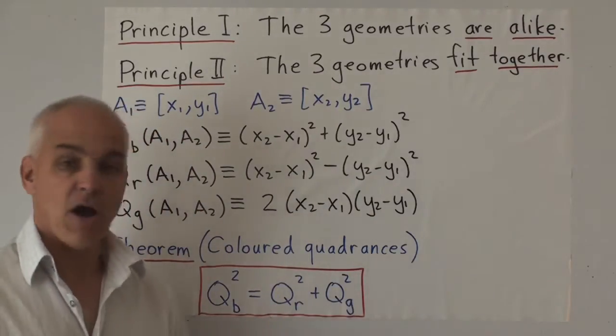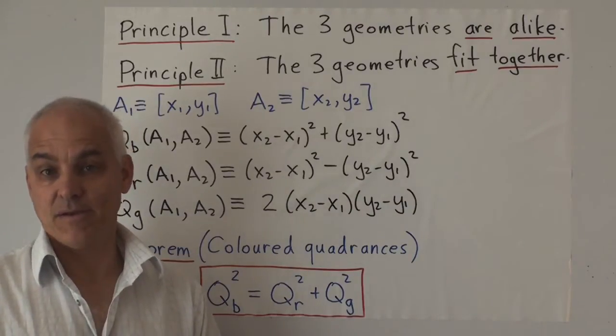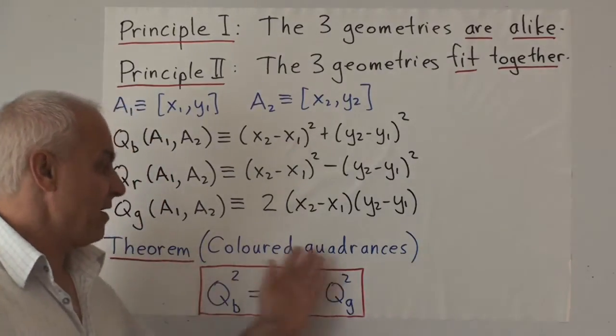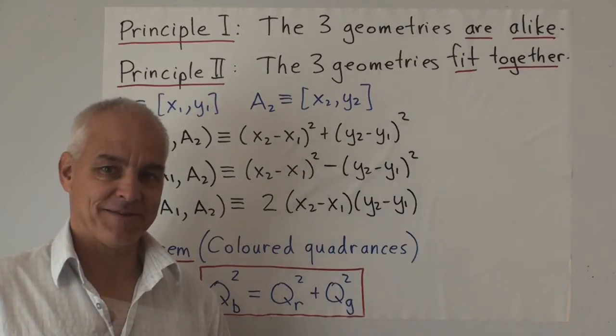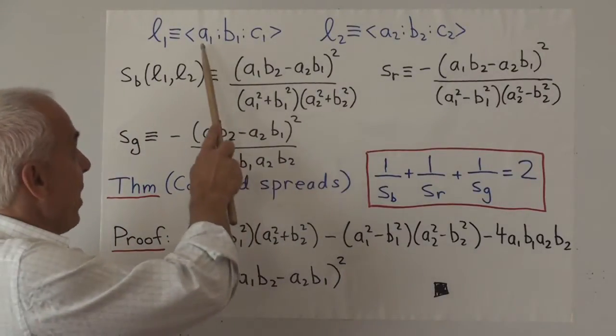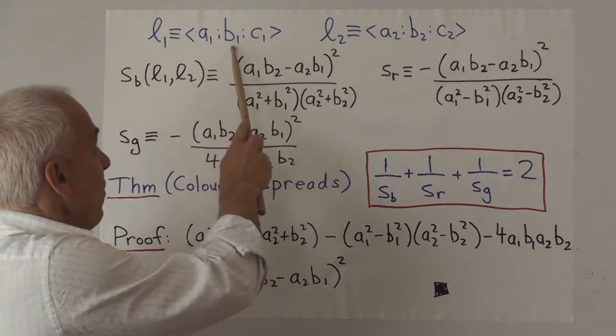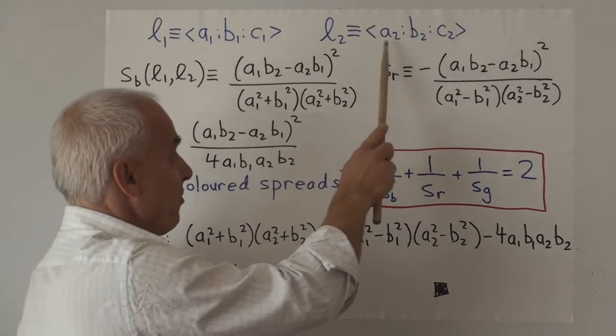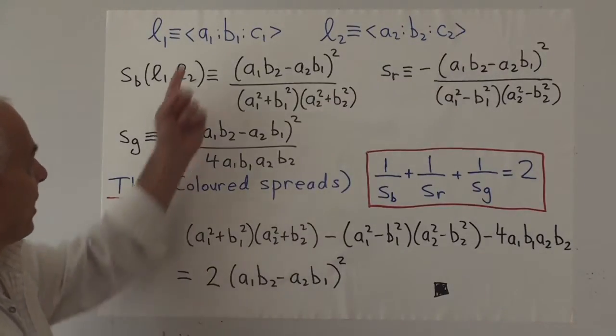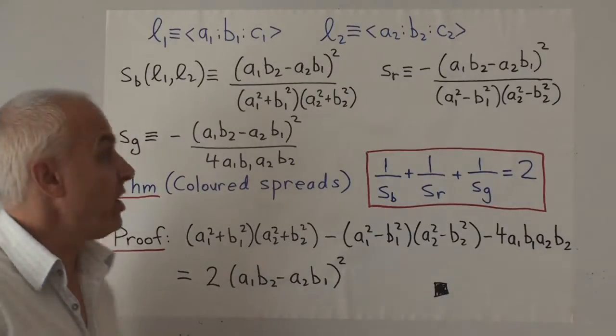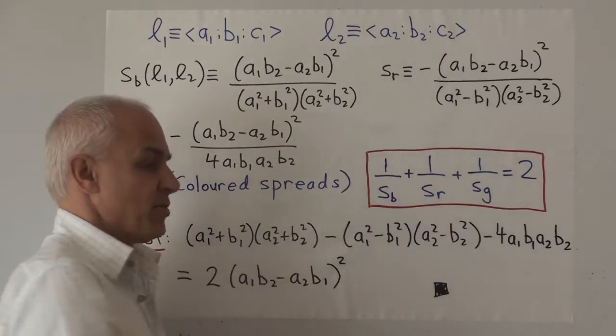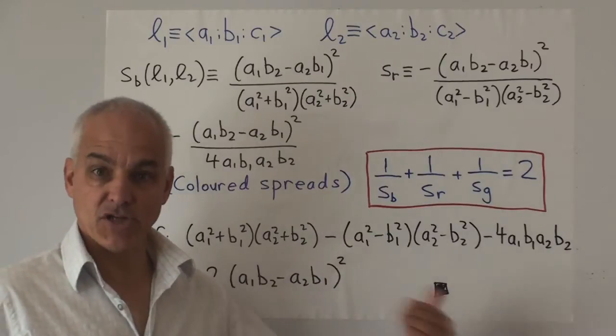Now what about spreads between lines? Well there's a kind of a corresponding theorem for those. Let's see what it looks like. So suppose we have two lines l₁ which in our notation is given by the three proportion a₁:b₁:c₁ and another line l₂ given by the proportion a₂:b₂:c₂. I remind you what those things mean. This line here is represented by the equation a₁x + b₁y + c₁ = 0. That's similar for that line, so we have two lines in the usual familiar Cartesian plane.